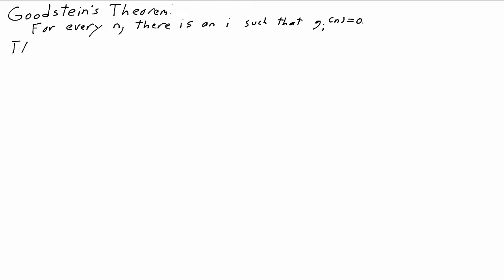We can define the Goodstein function, big G of n, to be this value of i. Big G of n is the number of steps it takes for the Goodstein sequence starting with n to reach 0. And what we'll show is that the Goodstein function is a very big function. It grows very, very fast.